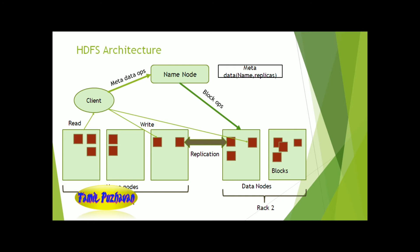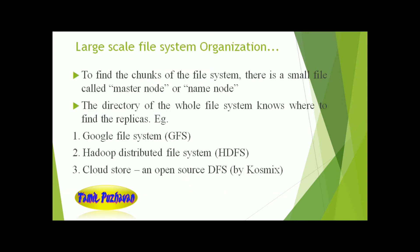The HDFS architecture shows that from the client, we access the NameNode for block operations on DataNodes. Read and write operations are performed on metadata — such as name and replicas — which are placed on Rack 1 and Rack 2. The master or NameNode maintains the directory of the whole file system and knows where to find the replicas.